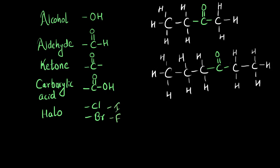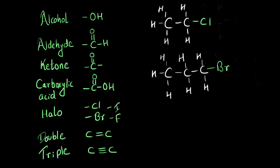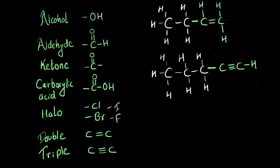Next, I want to talk about the halo group — the halogen family group — basically the atoms of chlorine, bromine, iodine, or fluorine. When they get attached to hydrocarbons, they also impart special functions to them. For example, this is a chloro group attached to the alkane family, and this is a bromo group attached to the alkane family. One last group: the double bond and the triple bond. Yes, these are also functional groups — when they come in between an alkane, they provide special functions to it.